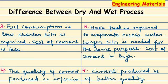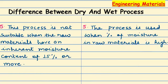Next, if we talk about another difference: if our raw materials have 15% or more inherent moisture content, then the dry process is not adopted for this condition. Instead, we adopt the wet process when the raw materials have high moisture content of 15% or above.